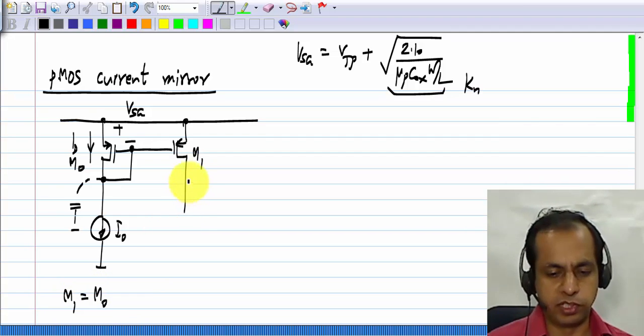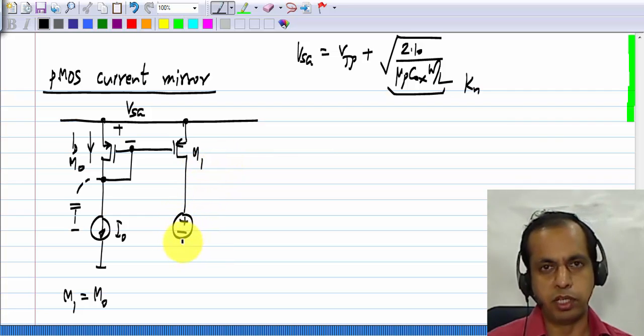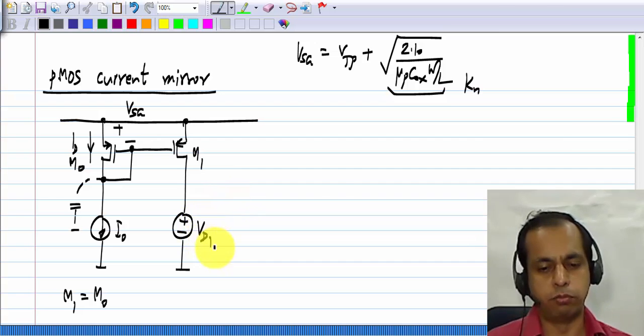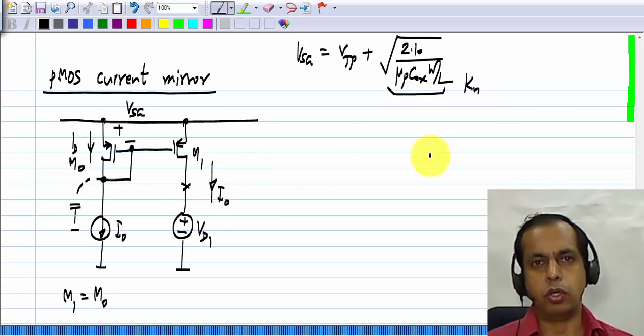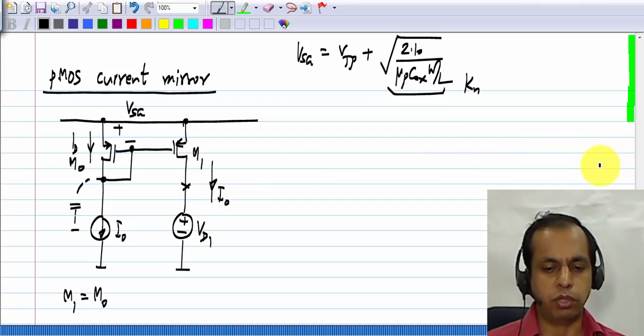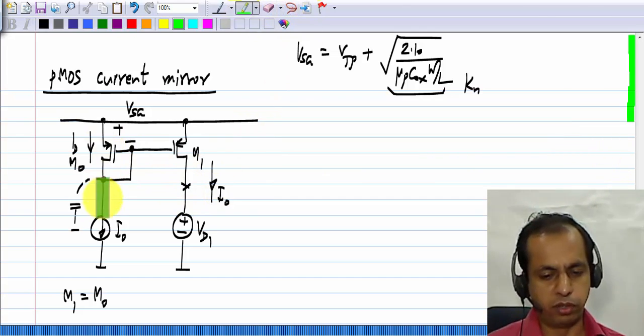Then, as long as M 1 is in saturation, let me show something connected to the drain of M 1. As long as this V D 1 is such that M 1 is in saturation, this current will be equal to I naught. Obviously, here I have ignored the effect of lambda. If you do have lambda, the current here will be slightly different from the current there, depending on how different the drain voltage here is compared to the drain voltage there.